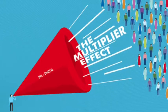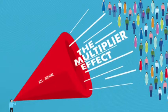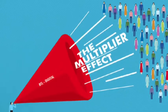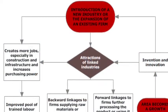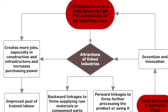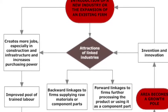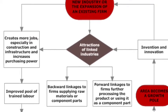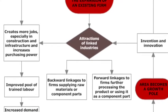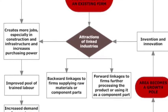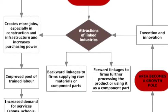Cumulative causation is closely related to the multiplier effect. The multiplier effect is when one thing sparks a chain of events that causes a very large loop. In this case, it is started by the introduction of a new industry. That new industry creates more jobs, which leads to more trained labor. The increase of labor increases the need for services, which in turn increases the population of the community through immigration.